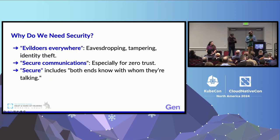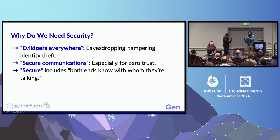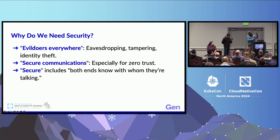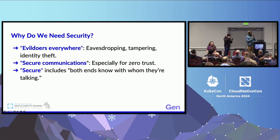Let's start with a critical question: why do we need secure communication? Understanding the specific threats helps us understand how we can address them. First, consider eavesdropping — without secure communication, any data transmitted over a network can be intercepted by malicious actors, including anything from private emails to sensitive financial data. The second issue is tampering. Even if the data isn't stolen outright, attackers can change it, which can have serious consequences.